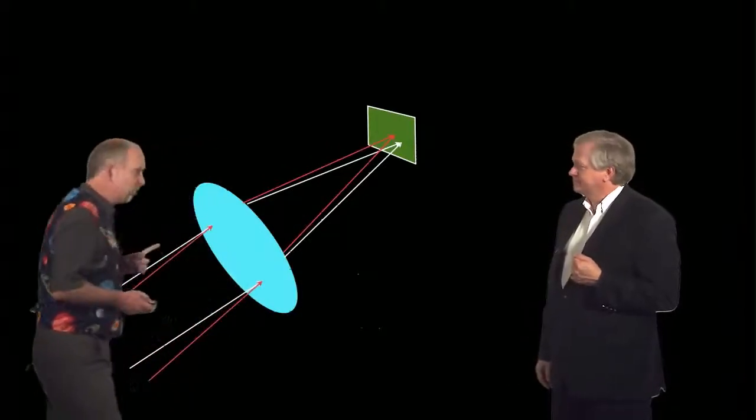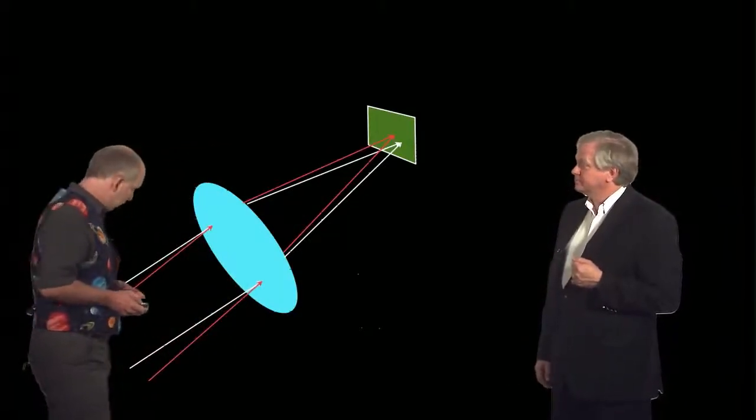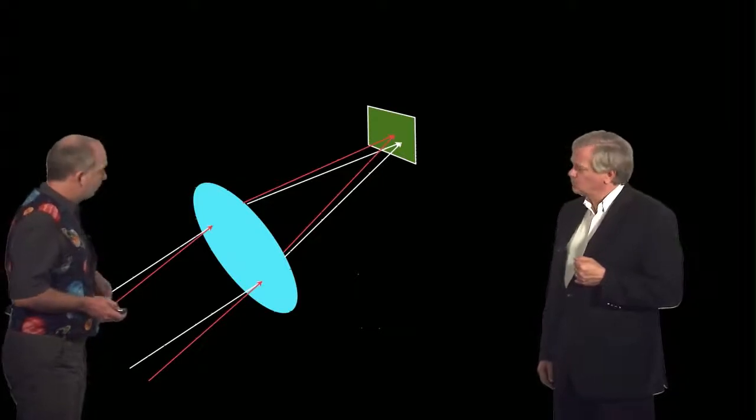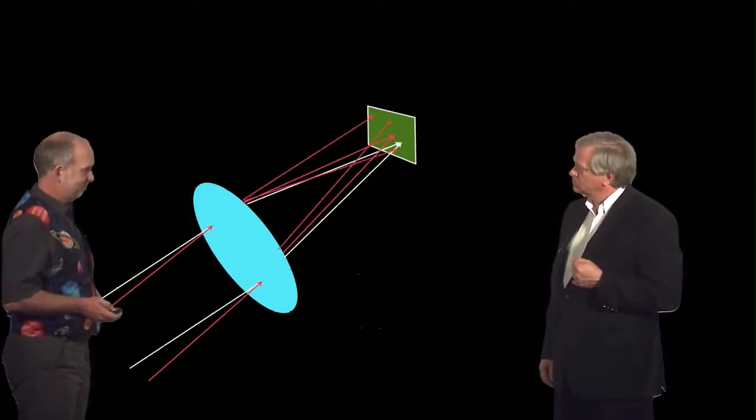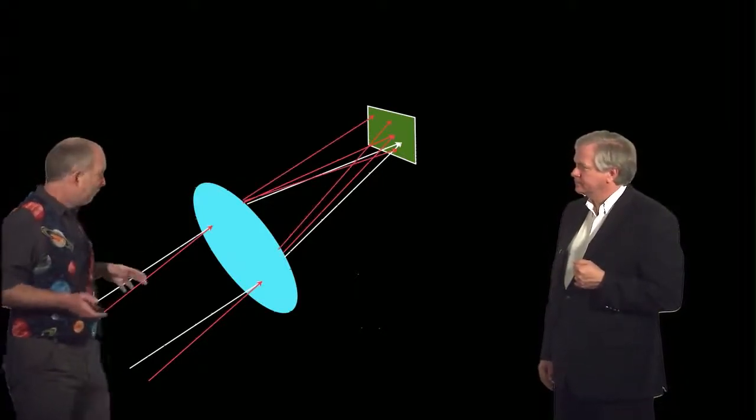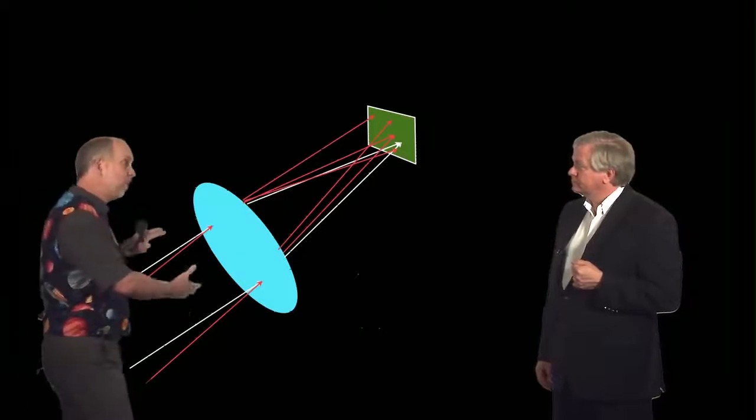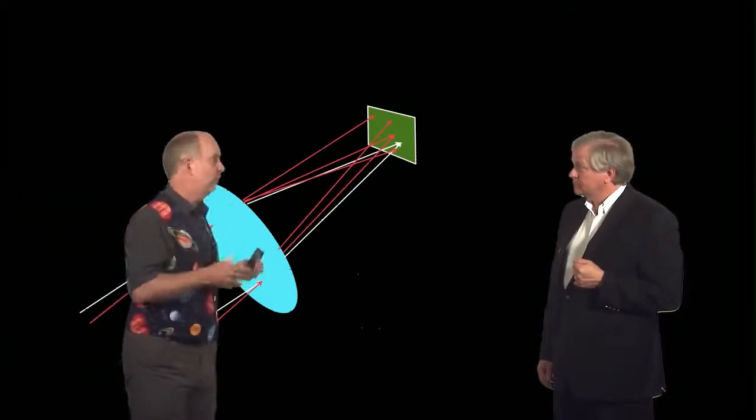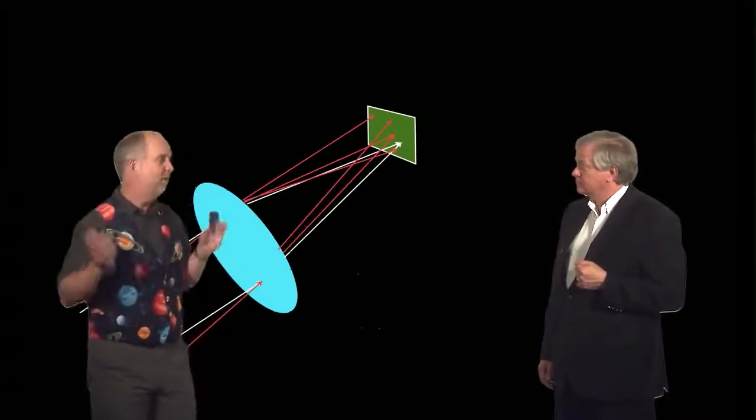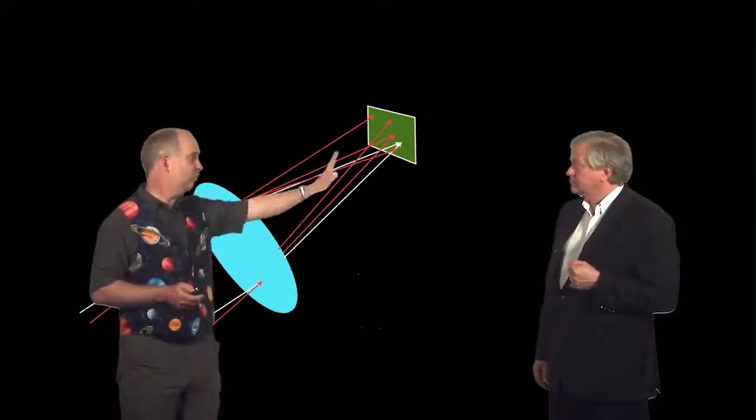So the problem is the light's not going where it's supposed to go. So instead of the light going like this, some fraction of the light's going elsewhere. Not a very big fraction, but if this red light was incredibly bright, even if only one part in a hundred, or one part in a thousand, or one part in a million was going the wrong direction, it's still going to swamp the rest of the stuff.